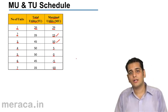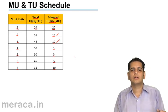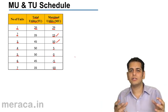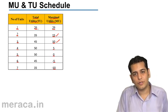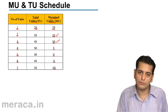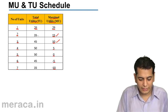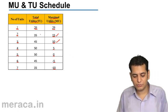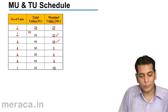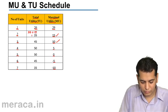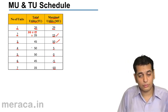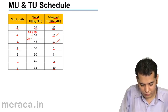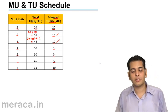Now let's look at total utility, which is the cumulative sum of all marginal utilities. At the first unit of consumption, since marginal utility is 20, total utility is also 20. At the second unit, total utility becomes 35 — because you derive 20 from the first and 15 from the second. At the third unit, 20 plus 15 plus 10 gives a total utility of 45.